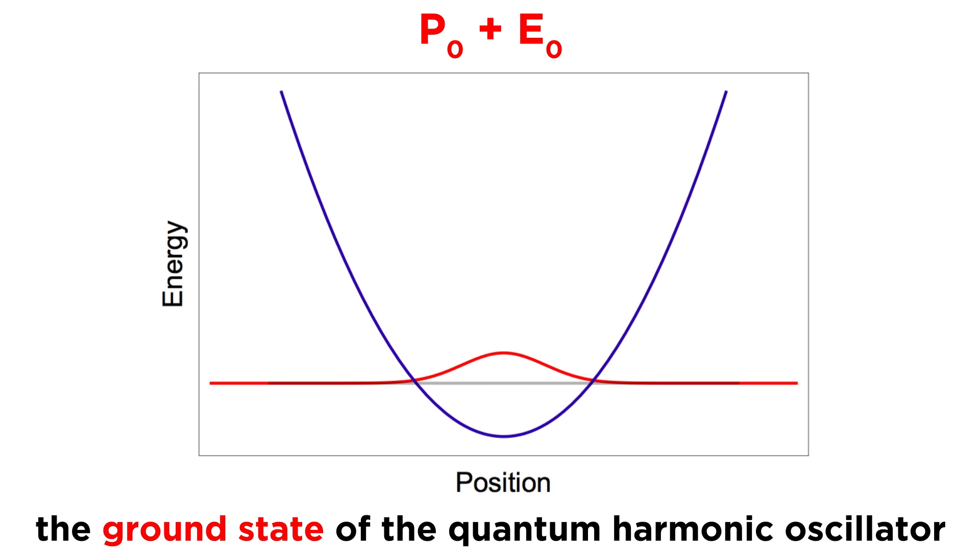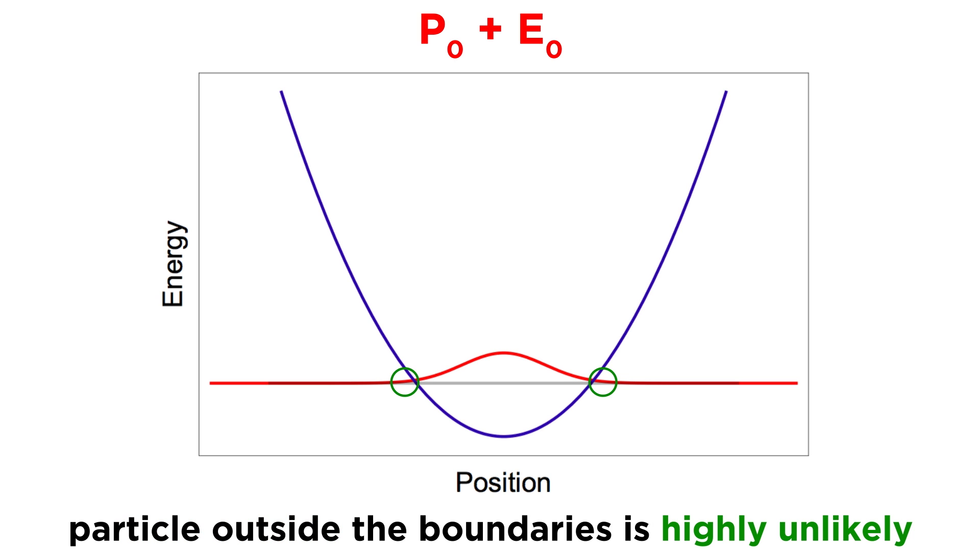So to summarize, here we see the ground state, and it is clear that the particle can't be found outside of the harmonic trap, as beyond these boundaries the probability density function equals zero, and the particle is primarily localized at the center.